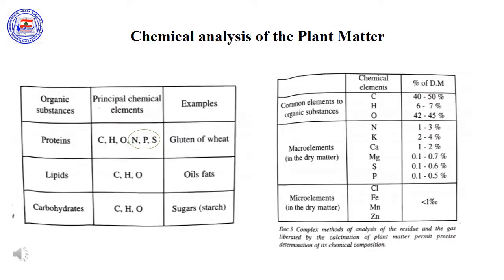As a conclusion from the previous experiments, the major elements needed for the synthesis of organic matter — protein, lipid, and carbohydrate — are carbon, hydrogen, and oxygen. All organic matter is composed of these three. However, proteins additionally contain nitrogen, phosphorus, and sulfur.